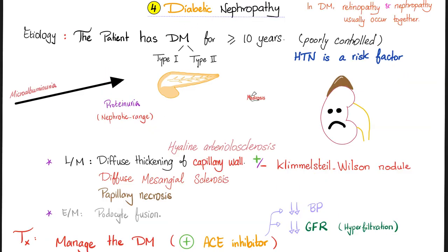Diabetic nephropathy: the patient has diabetes — could be type 1 or type 2 — for a long time. Features include hyaline arteriolosclerosis, Kimmelstiel-Wilson nodule, diffuse mesangiosclerosis, papillary necrosis, and podocyte fusion. Treat the diabetes and give ACE inhibitors. ACE inhibitors work like magic in three diseases: number one, diabetic nephropathy; number two, scleroderma nephropathy; number three, Henoch-Schönlein purpura with its associated IgA nephropathy.